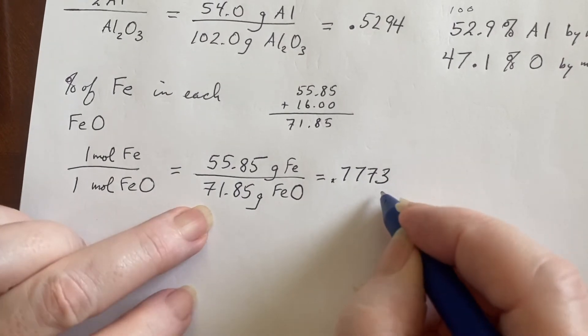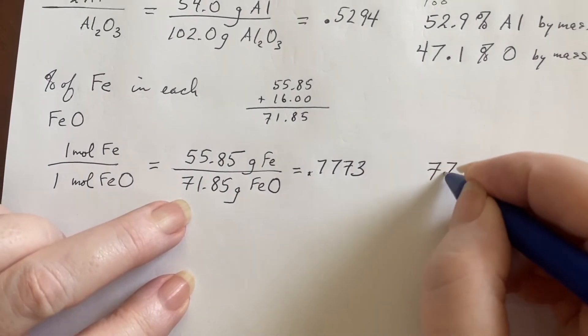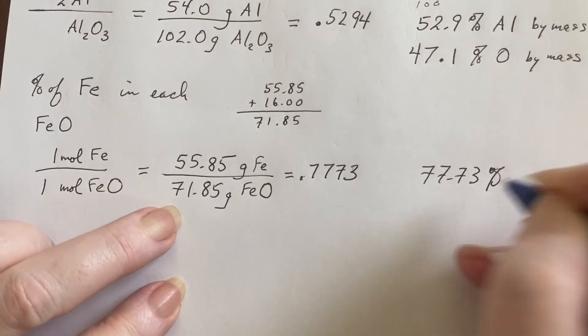So I hit the calculator on that and I get .7773. That's not a percentage though. That means it's 77.73% iron.